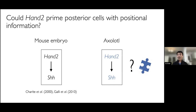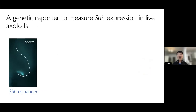This led to a very obvious hypothesis: if post-embryonic axolotls continuously express HAND2 throughout life, this could be a priming factor that tells them to remain posterior in identity and to switch on sonic hedgehog expression after an amputation. So we wanted to test if this genetic interaction is indeed evolutionarily conserved using mutation and misexpression analyses. We first generated a transgenic reporter axolotl in which expression of sonic hedgehog induces expression of a blue fluorescent protein, which you can see in the posterior limb bud.